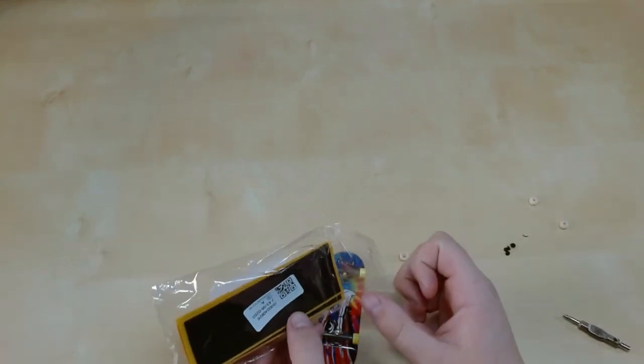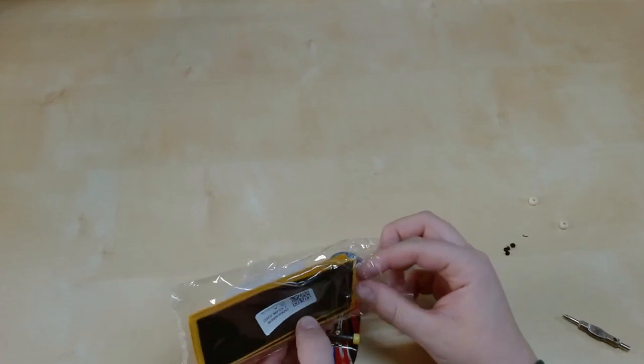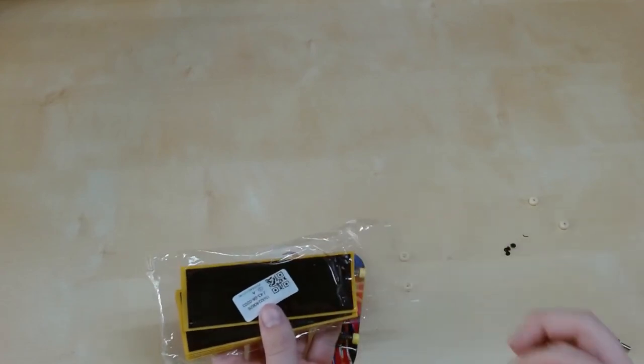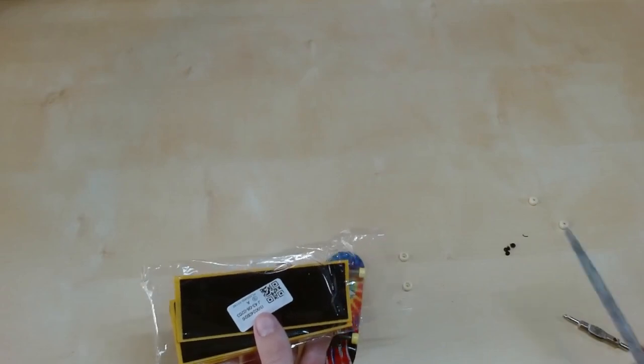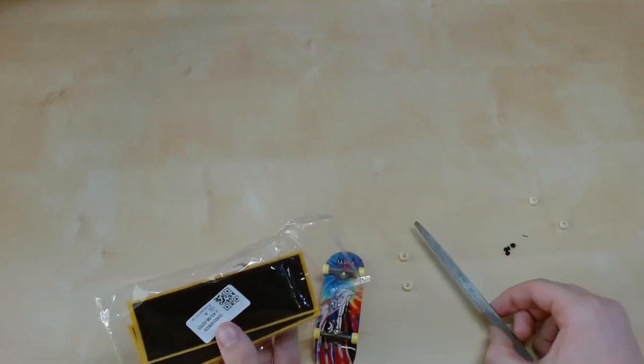Next up is the grip tape. We're going to be showing a super easy way to get it on. All you'll be needing is a nail filer. We have a heavy duty one here - you can use any type, it really doesn't matter.